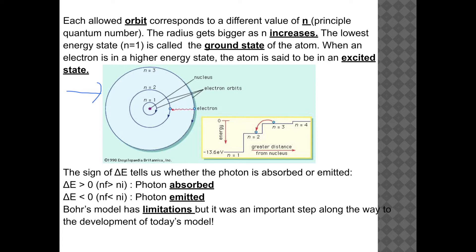Each orbit corresponds to a different value of n, known as the principal quantum number. The first ring is n equals 1, then n equals 2, n equals 3, and so on — as the radius gets bigger, n increases. The lowest energy state is known as the ground state, and when an electron is in a higher energy state, we call it the excited state.